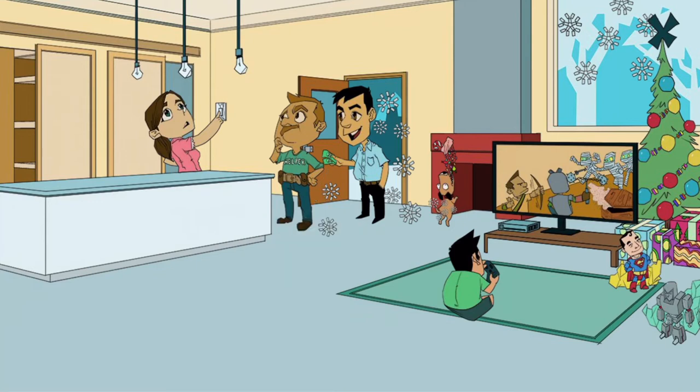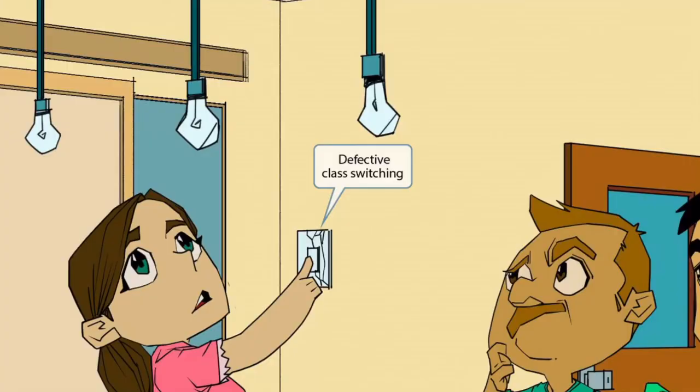The woman touching the light switch should help you think of class switching. If we zoom up, we can see that there is a crack in this switch, which alludes to the idea that class switching is impaired. So hyper-IgM syndrome results in defective class switching.